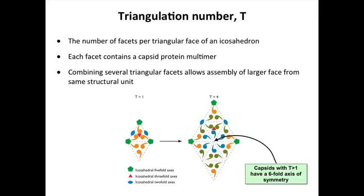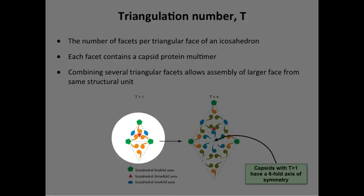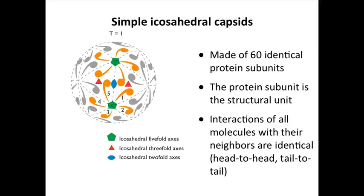This turns out to be the way you build bigger and bigger particles. You start with a small T equals one icosahedron, you can make small particles. But if you want to make bigger ones, you just add more triangular facets. And those meme viruses, which are the biggest, have over a thousand triangular facets in each equilateral triangle that makes up the icosahedron. So that's all that a T number is. It's just the number of facets per each triangular face. There's one facet here, there's four here.